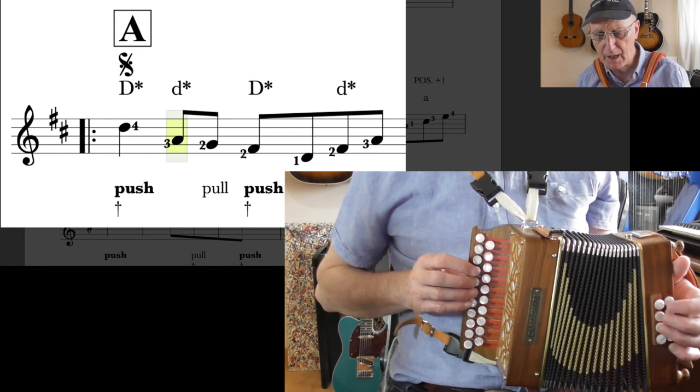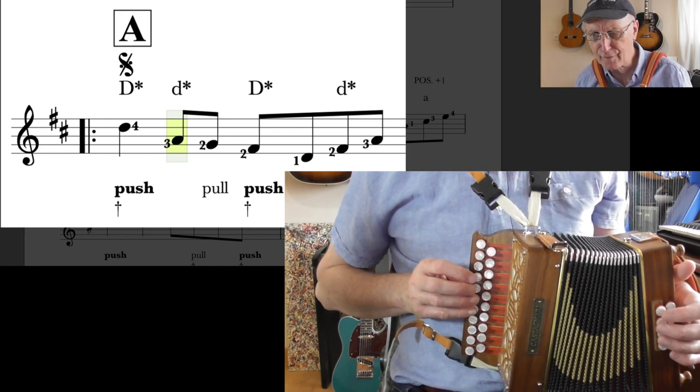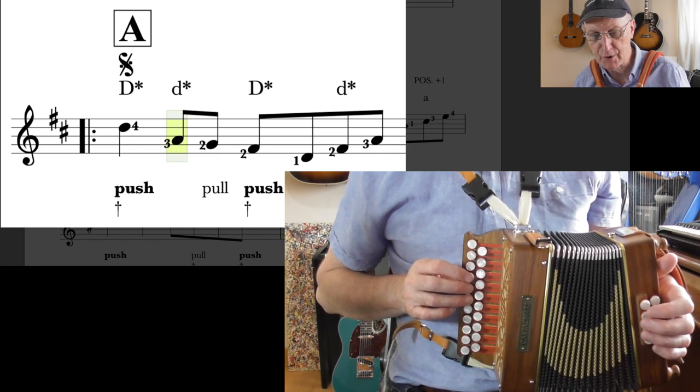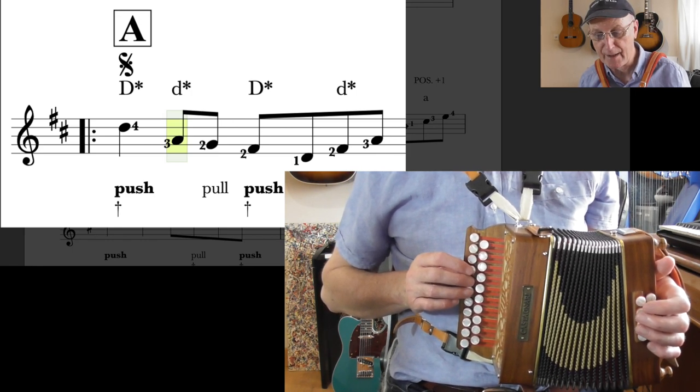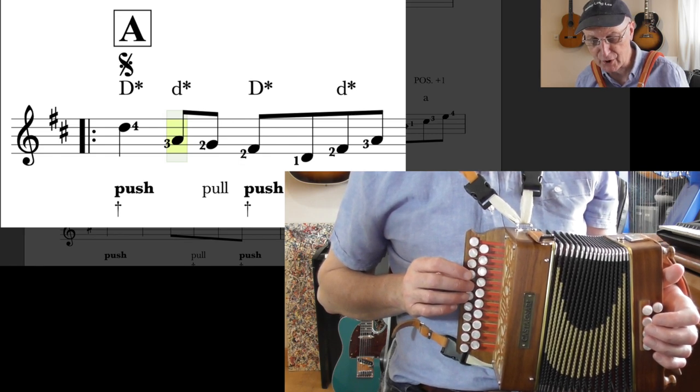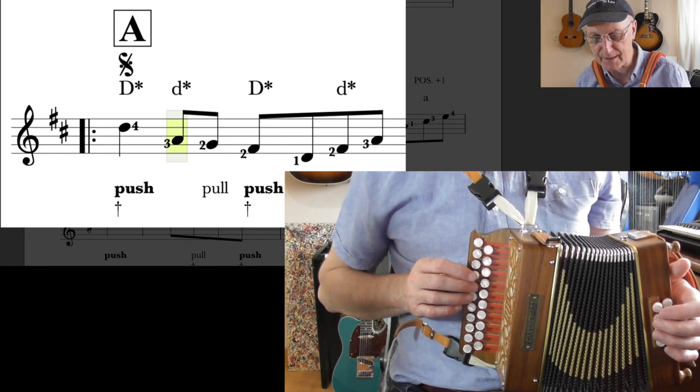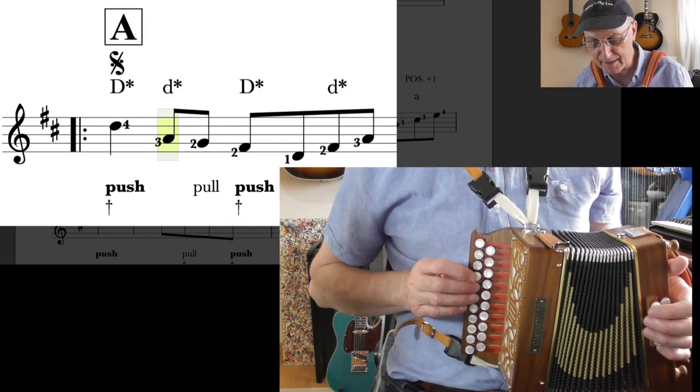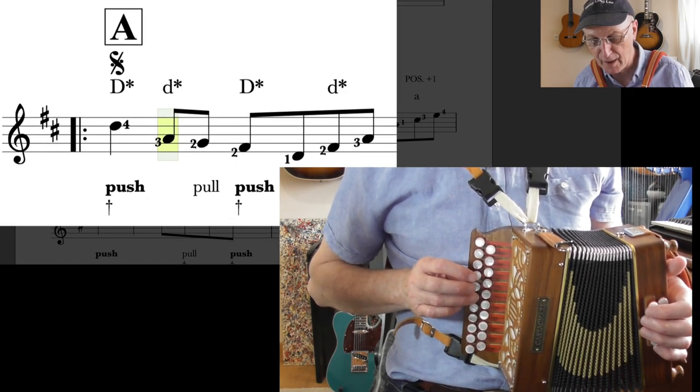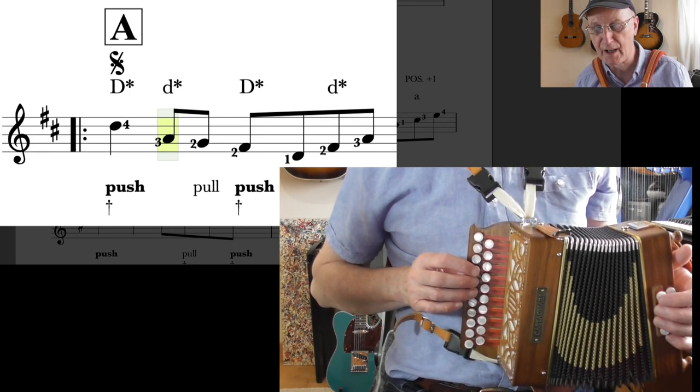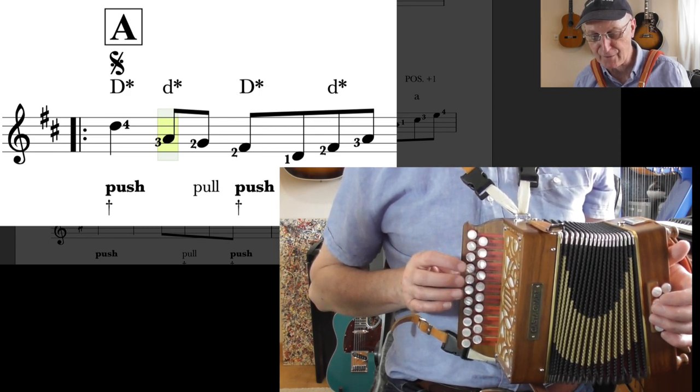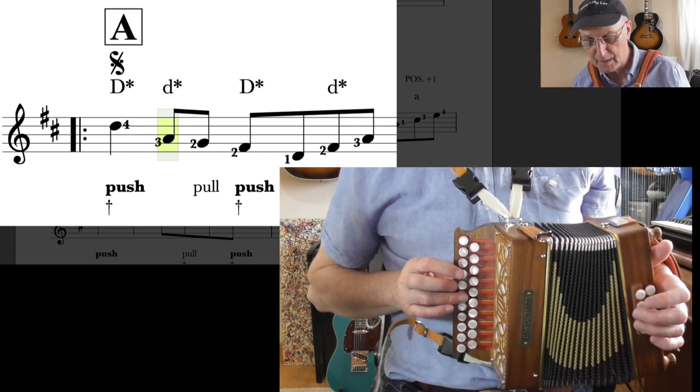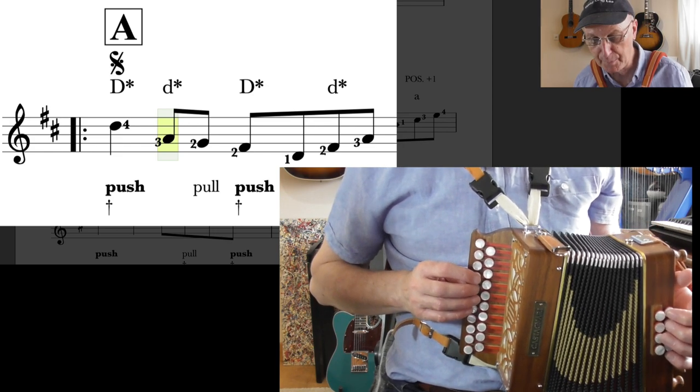So in this home position, our little finger's on the D, our third finger's on the A, both on the push. Then we come to the button above that and pull out to get the note G and then push the same button in to get the F sharp. First finger falls on the D and then second finger on the F sharp again and third finger on the A. So the last three notes, D, F sharp, A. So there's only one note on the pull in that bar.